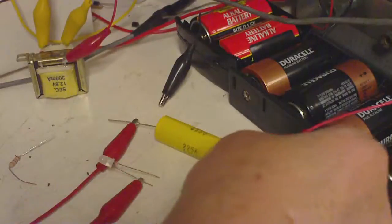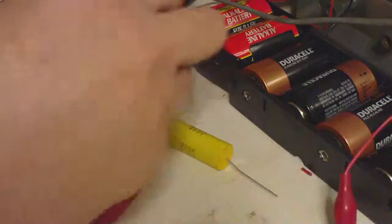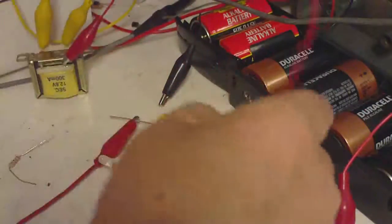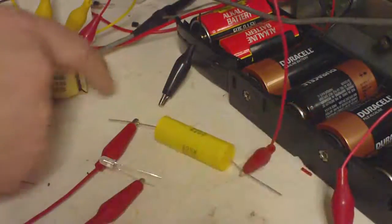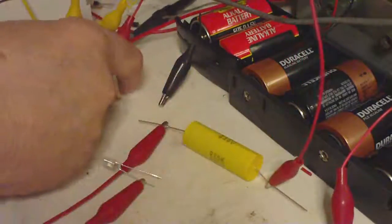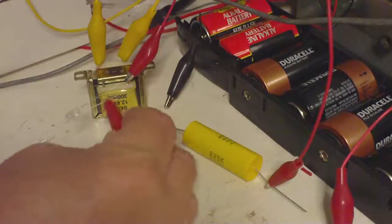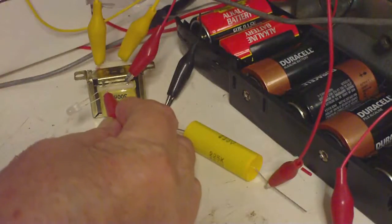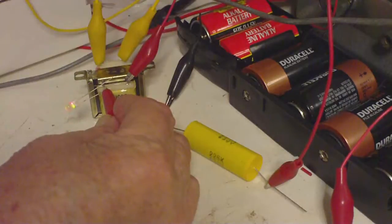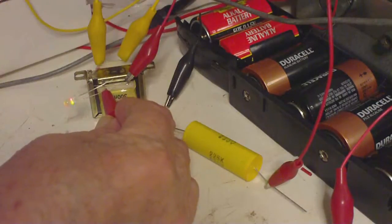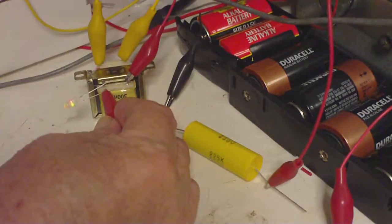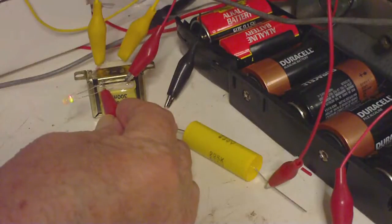Now I'm going to hook up our AC supply. Okay, here you can see both the green and the red are glowing because we have AC current continuously changing back and forth.